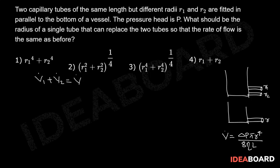Then I can write the volume flow rate of the first capillary tube will be delta P pi R1 to the power of 4 divided by 8 eta L, plus the volume flow rate through the second tube will be delta P pi R2 to the power of 4 divided by 8 eta L.